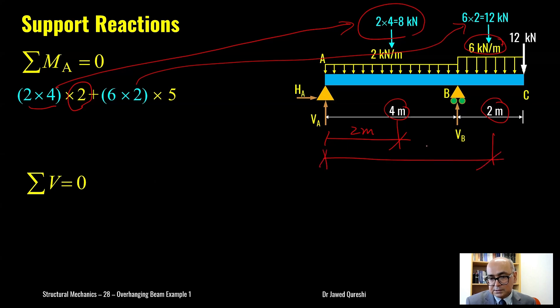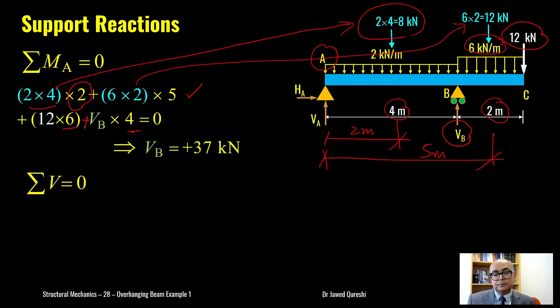And that's the reason we multiplied 5 here. And then we have this 12 kN point load at the free end and this is 6 meters away from point A and VB is creating a moment as well with respect to A. But this time it is creating anti-clockwise moment with respect to A. So that's why we multiply 4 over here and that's why there's a positive sign which is missing here. And if we simplify this we get VB as plus 37 kN.